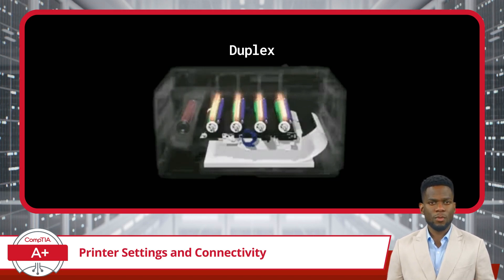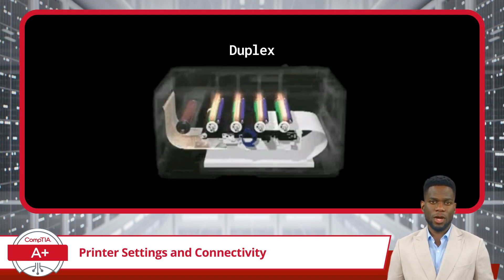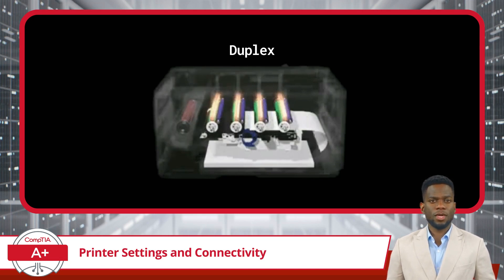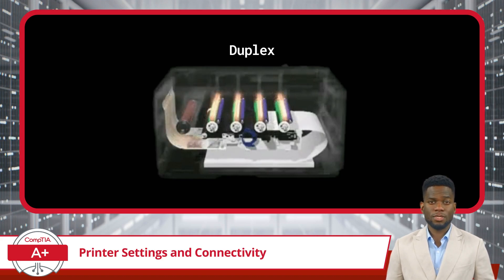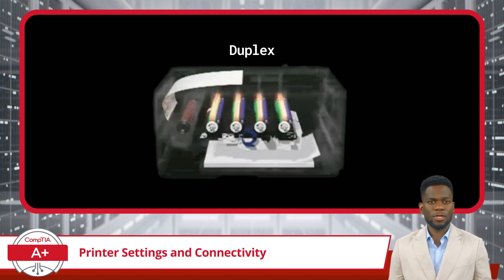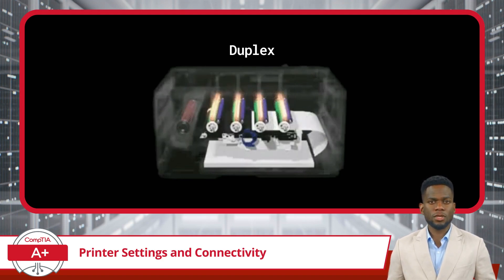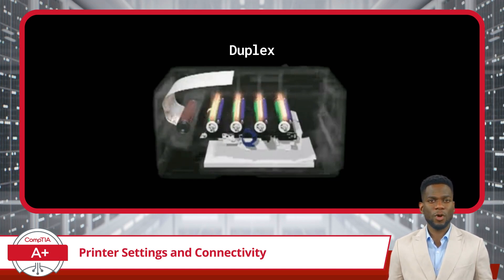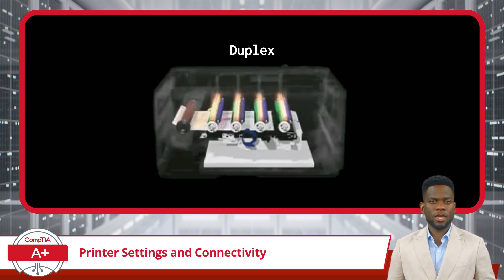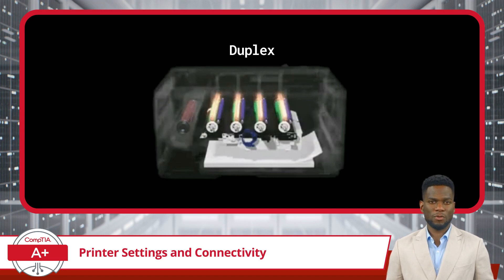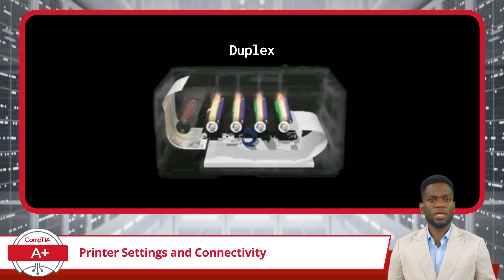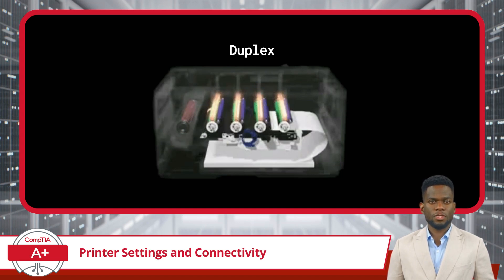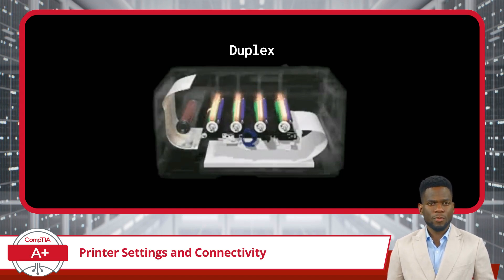In duplex printing, the printer is equipped with mechanisms that allow it to flip the paper and print on the reverse side. This process typically involves two steps: printing on one side of the paper and then flipping it over to print on the other side. Some printers achieve duplex printing through built-in duplexing assemblies, while others require manual intervention where the user flips the paper themselves. Duplex printing significantly reduces paper usage, translating to cost savings and environmental conservation, effectively halving the amount of paper required and making it an eco-friendly option.